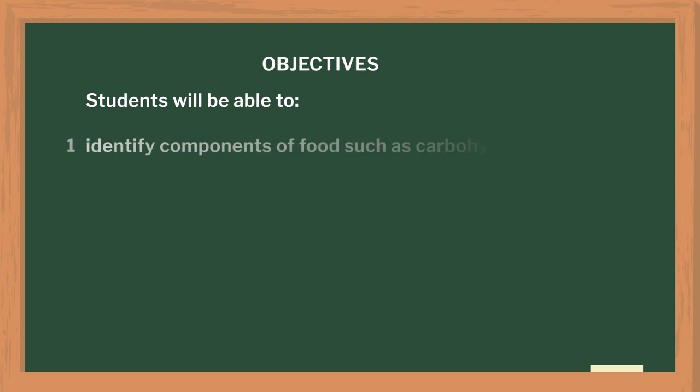I will share with you some activities which you as a teacher can conduct in your class to teach the topic of food components and adulteration. Through this lesson, the students will be able to first identify the different components like carbohydrates, proteins, fats, minerals, etc.